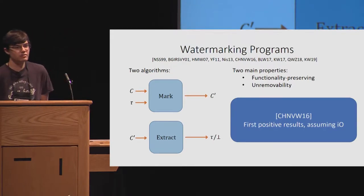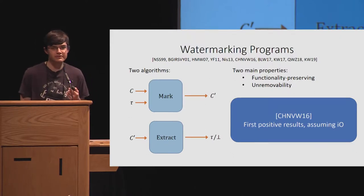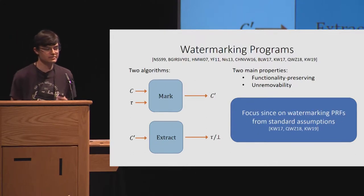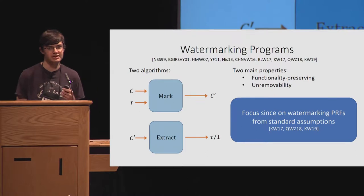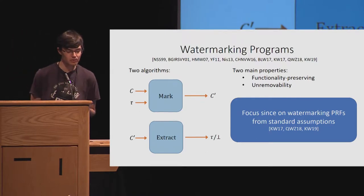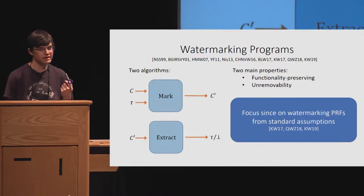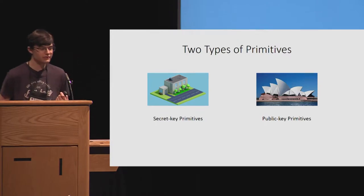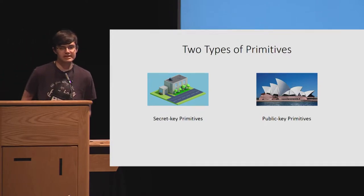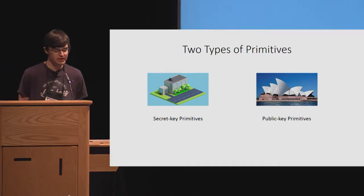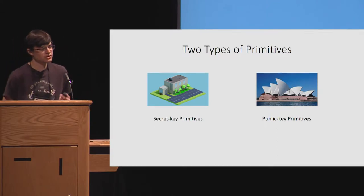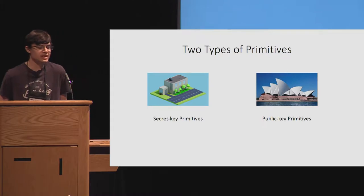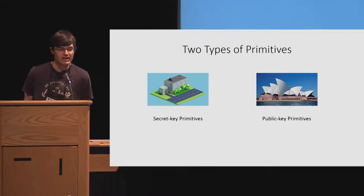What is known so far? In the work of Cohen et al., they gave the first positive results for watermarking, assuming indistinguishability obfuscation. Since then, the focus has been on watermarking pseudorandom functions from standard assumptions, with a series of works by Kim and Wu, Quach, Wichs, and Zirdelis, and then Kim and Wu again in the previous talk. Basically, the focus so far has been on watermarking secret key primitives, which were already quite challenging. Since they have less structure than public key primitives, it was assumed that public key primitives would be more challenging to watermark, and this hasn't been adequately studied.